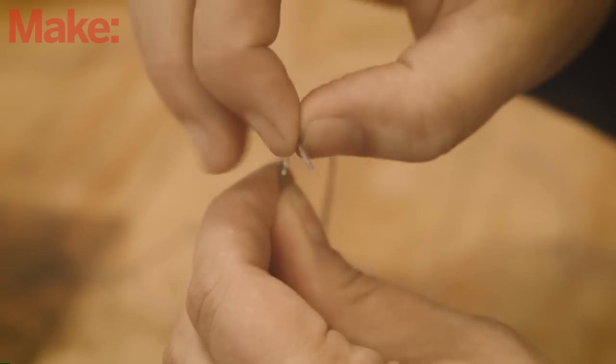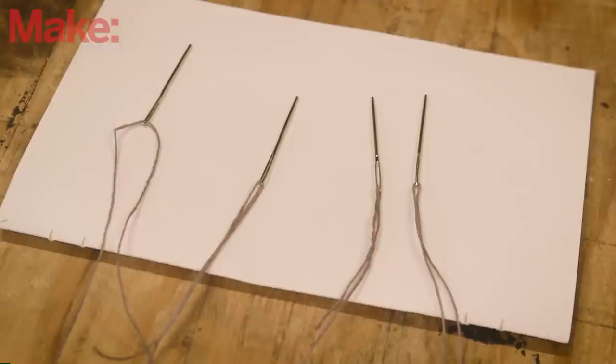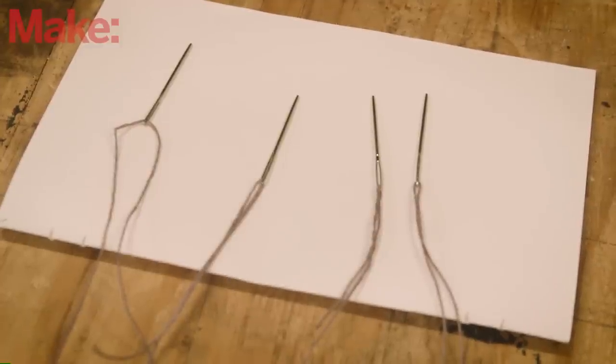Now thread the string on each side. You should now have two strings with four needles. We are now ready to stitch the book together.